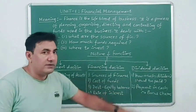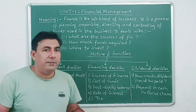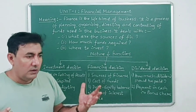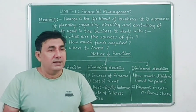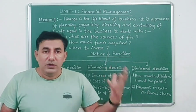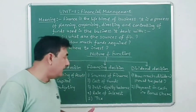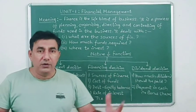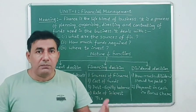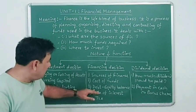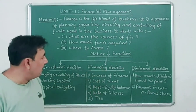Another consideration is debt-equity balance — that means capital structure, which is owner's capital and borrowed capital. Borrowed capital is debt and equity is owner's capital, so you need a good balance. That is also a major function of the financing decision.